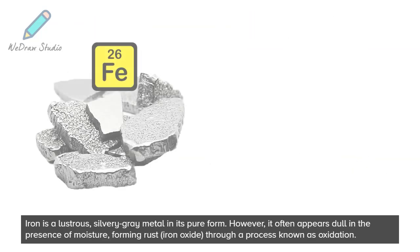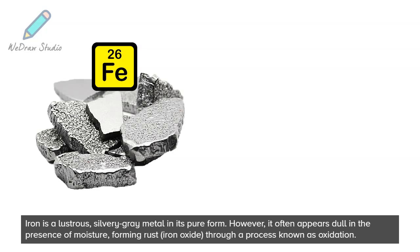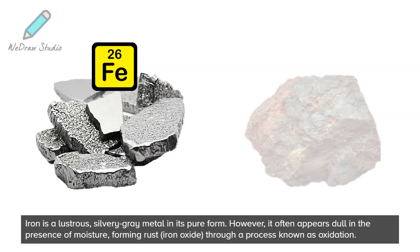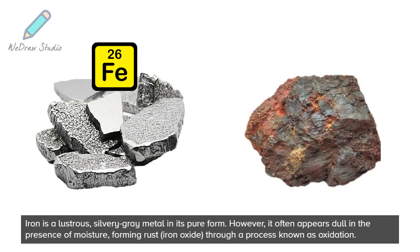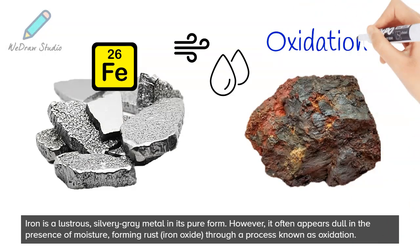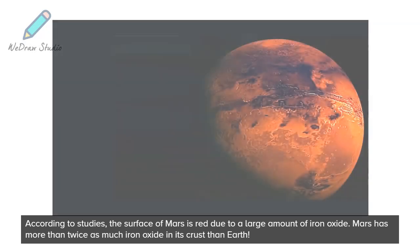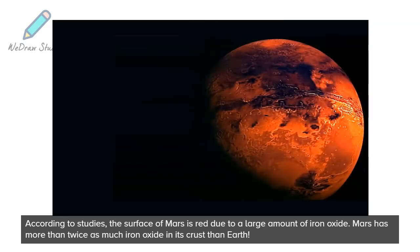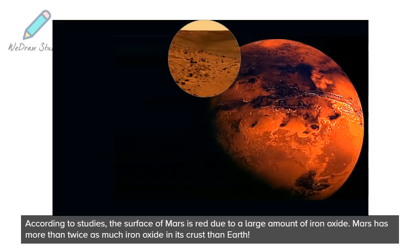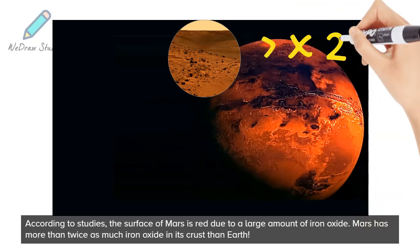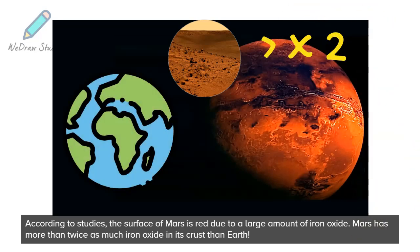Iron is a lustrous, silvery-gray metal in its pure form. However, it often appears dull in the presence of moisture, forming rust — iron oxide — through a process known as oxidation. According to studies, the surface of Mars is red due to a large amount of iron oxide. Mars has more than twice as much iron oxide in its crust than Earth.